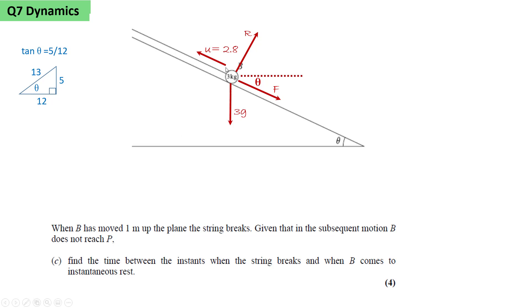When B has moved up the plane 1 meter, we've already calculated that the velocity of the particle will be 2.8 meters per second. With no tension in the string, we're left with the weight, the normal reaction, and the friction as the three forces acting on the particle.